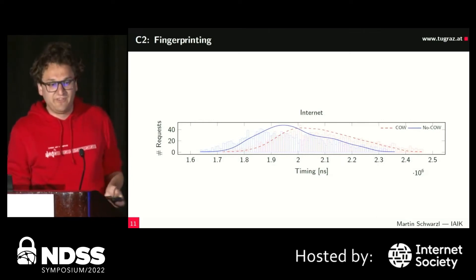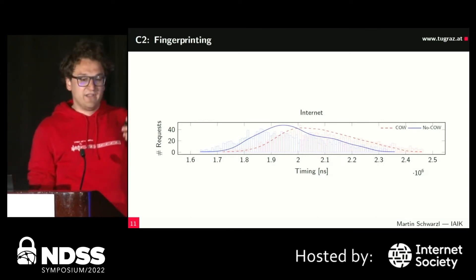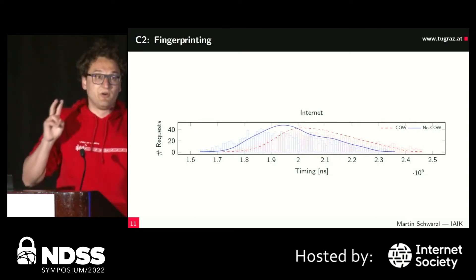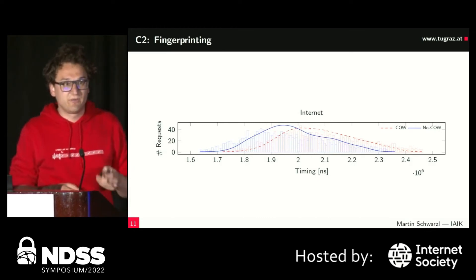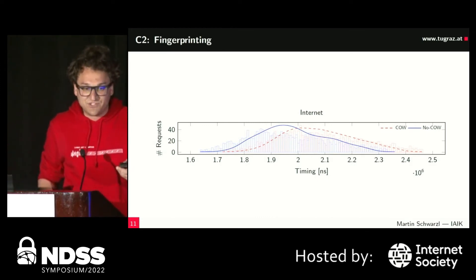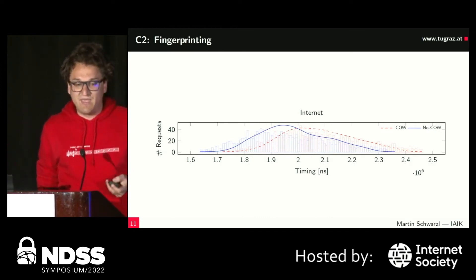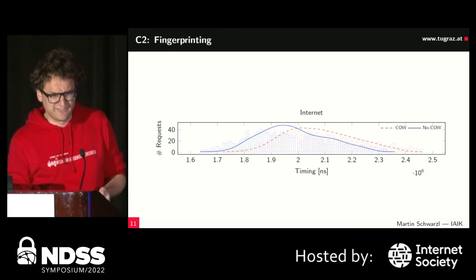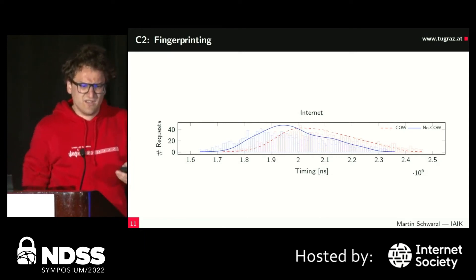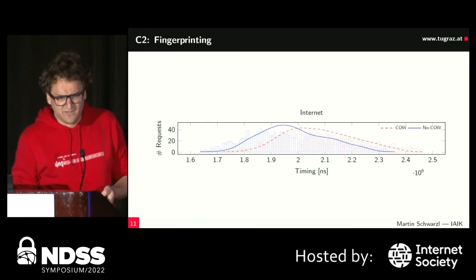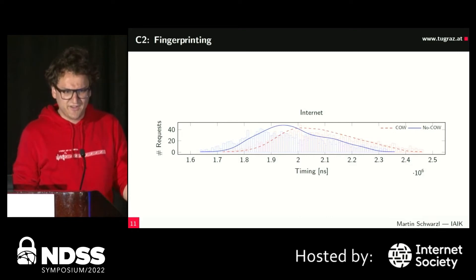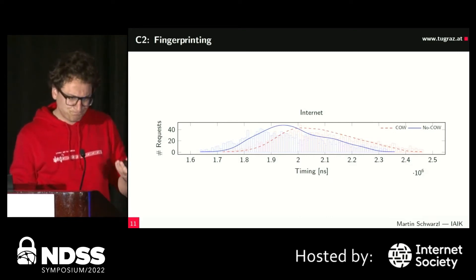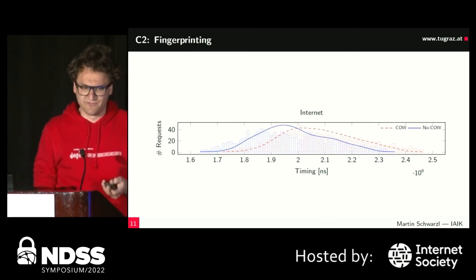With only 40 requests over 40 hops, there is a significant timing difference. An amplification factor of 16 pages leads to a clear timing difference between the correct libc version and the incorrect ones.